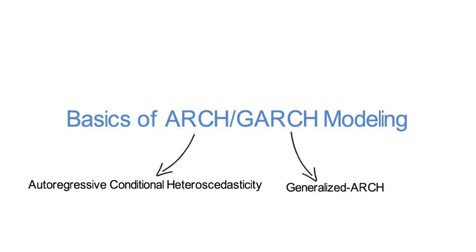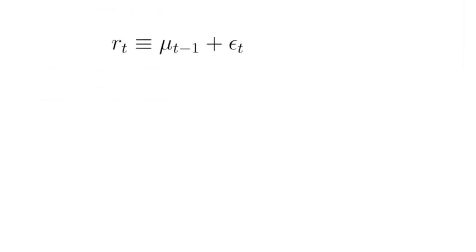Let's start with the basic return decomposition of realized returns into the expected and the unexpected part. From now on, we call the parameterization of the expected part μt-1 to be the mean equation.